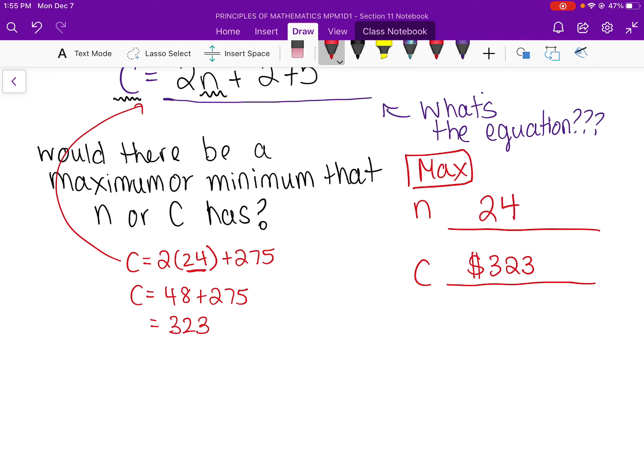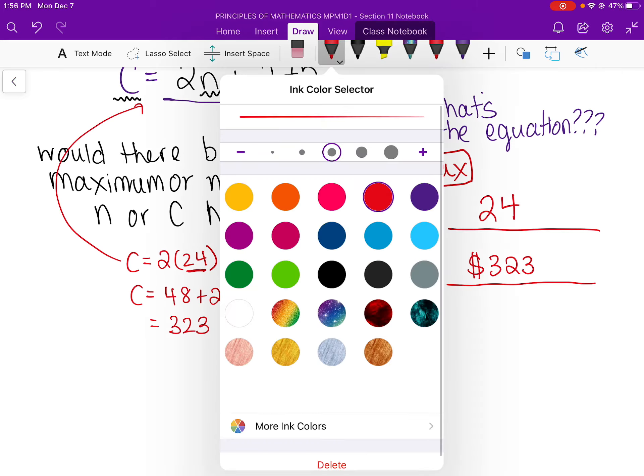So that's kind of what it means to have restrictions on variables. Like this is your equation, but you can't put like N equals 5,000. There's not 5,000 seats on a bus, so that's what restrictions mean. Does that make sense? Do you guys have questions? Ooh, let's figure out the minimum before we go.